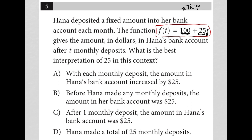The question asks: what is the best interpretation of 25 in this context? Choice A says with each monthly deposit, the amount in Hannah's bank account increased by $25. That's absolutely true — that has to be the correct answer. Every month, every time t goes up in value — month one, month two, month three — her bank account increases by that $25.